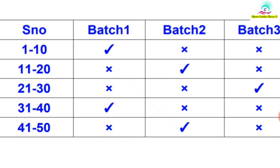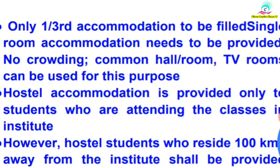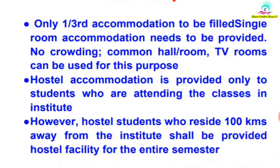This is the guideline that you can access for the UGC guidelines. Only 1/3rd accommodation is to be filled — single room accommodation, one room to be filled with one member, two members to be filled in one room. So this is the 1/3rd accommodation, which means at home to be filled with the hostel. That is the 1/4th accommodation. If students are attending the institute, many students stay there.